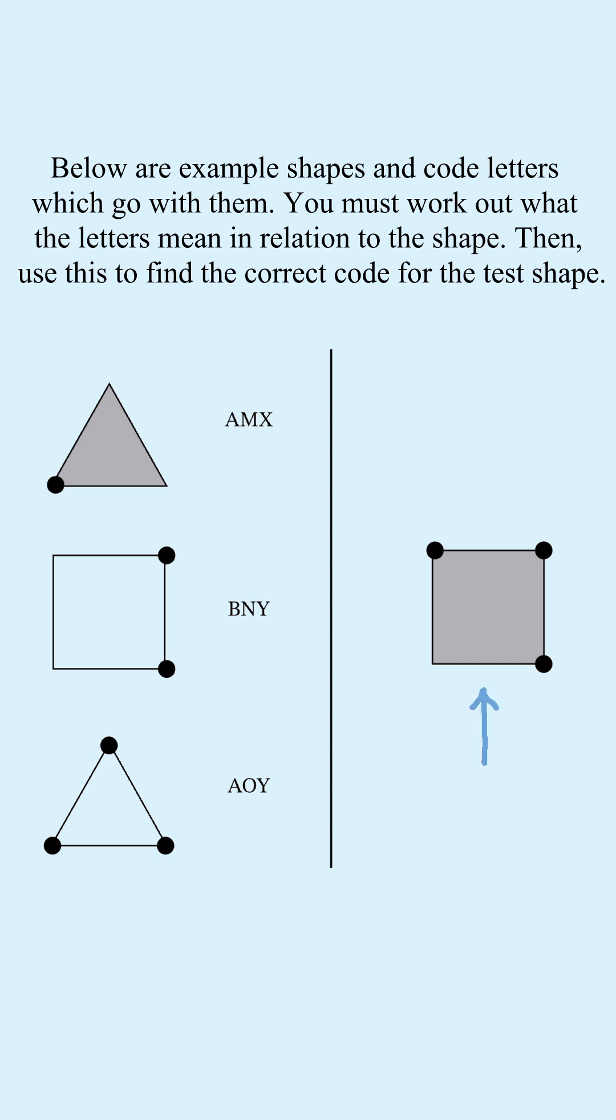We're trying to work out the code for this figure. It's a square, so the first code letter is B. It's got three dots around it, so the second code letter is O. And it's grey, so the third code letter is X.